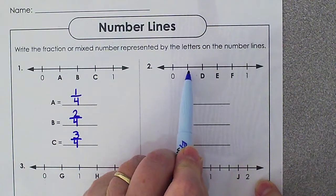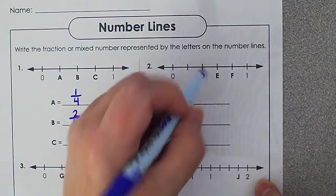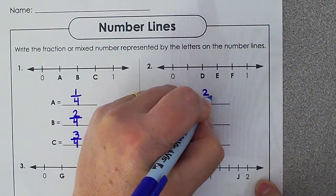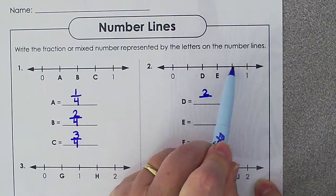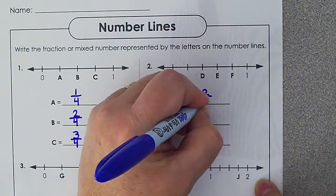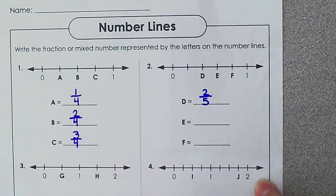Point D is 1, 2 marks over. But there are 1, 2, 3, 4, 5 marks in the whole number line. So my fraction for D is 2 fifths.